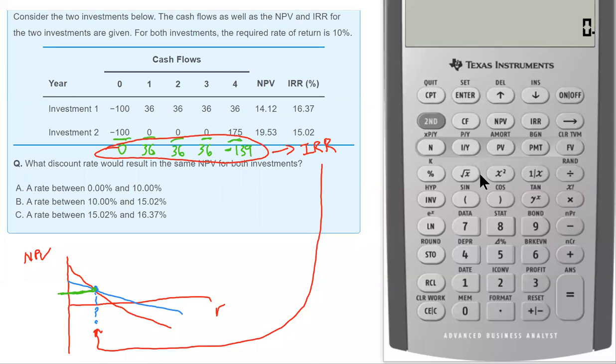So I've got my calculator, I'm going into cash flow, I'm just going to clear everything, clear the work. And now let's enter these. The first cash flow is zero, hit enter, down arrow, cash flow number one is 36. Hit enter, and the down arrow.